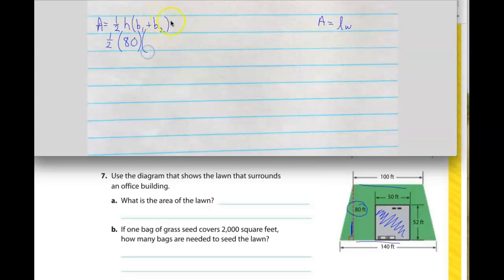And we're going to multiply that by the two bases. So we have 100 plus 140. If you need to, write it out if you can't do this in your head. But that is going to be 240, so we're going to put 240 over here.